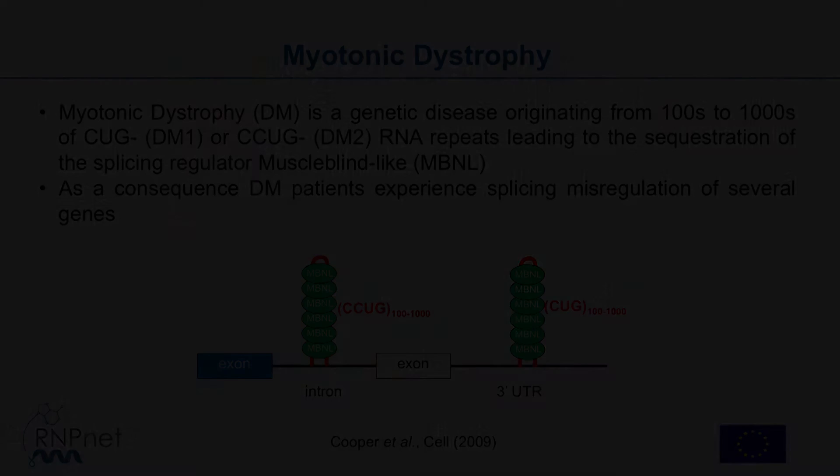I'm working on myotonic dystrophy, which is a devastating disease of the muscle, as its name implies. It's an inherited disease due to a mutation in the genome, which is an expansion of CTG repeat — a large expansion, hundreds of thousands of CTG repeats — in the 3-prime region of a gene named DMPK.